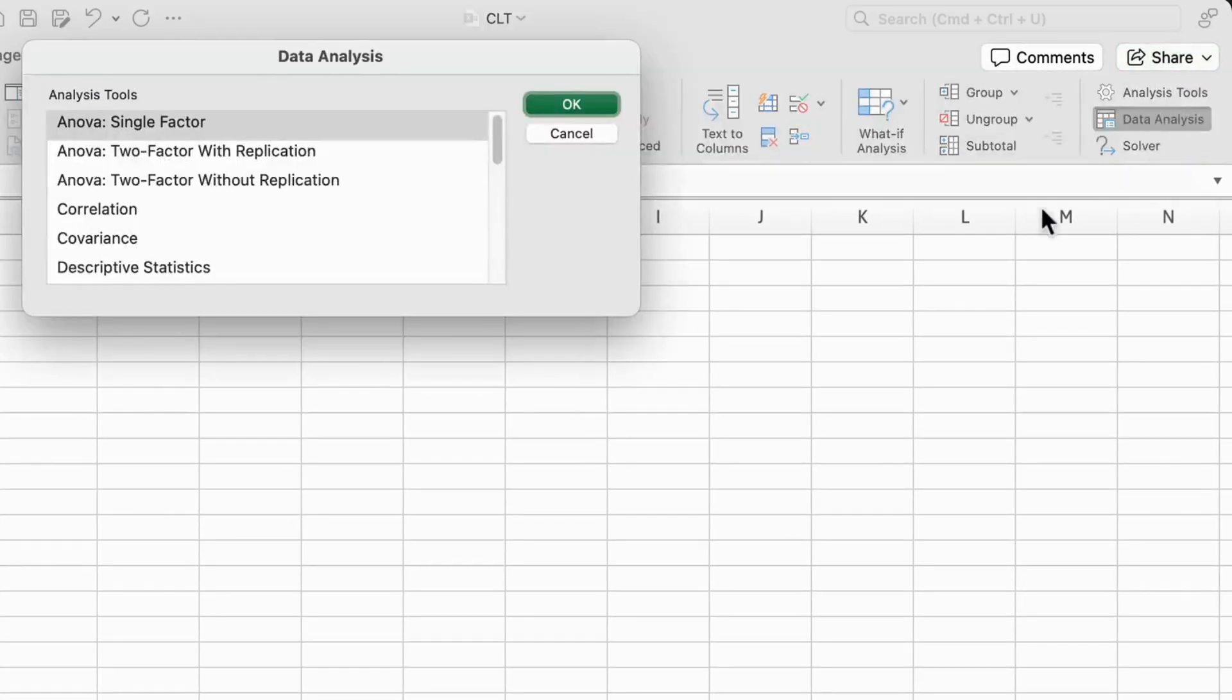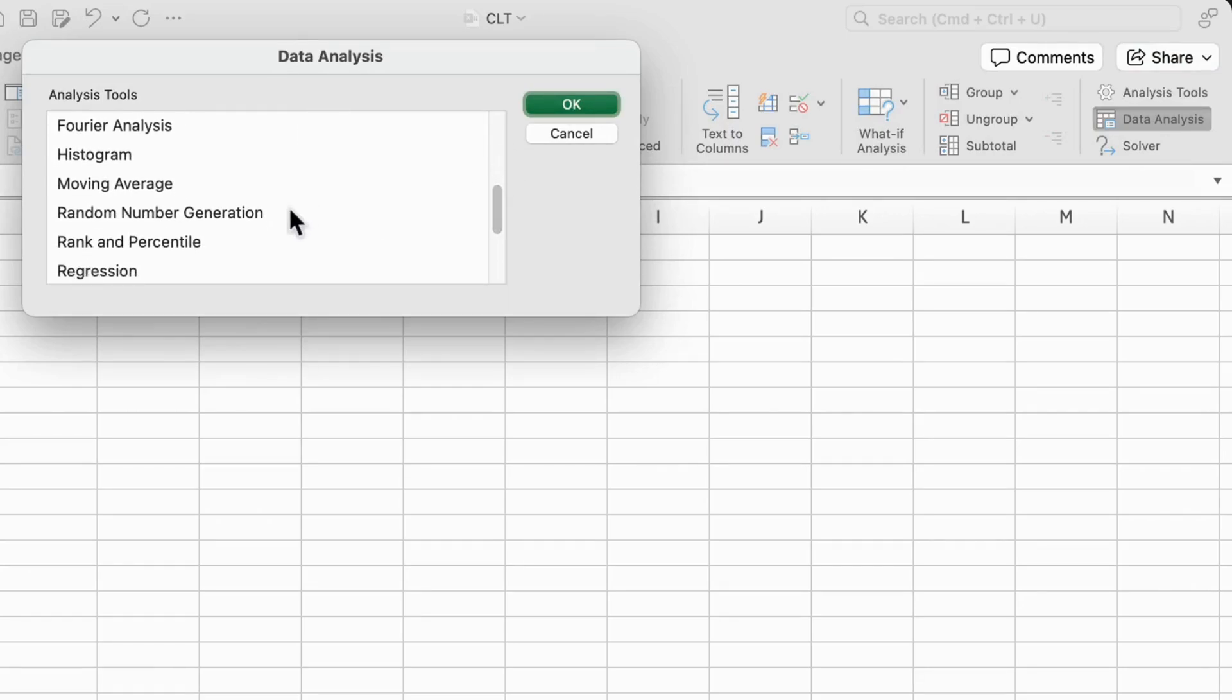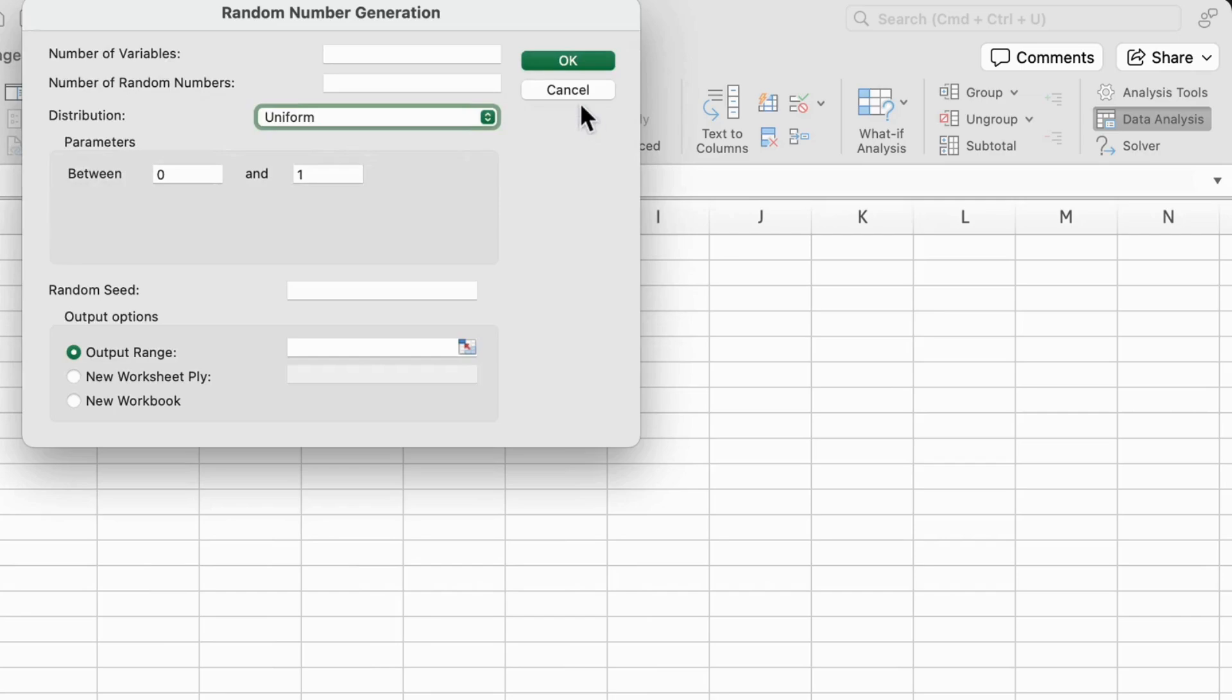To do that first go to the Data tab and click on Data Analysis. Select Random Number Generation and click OK.